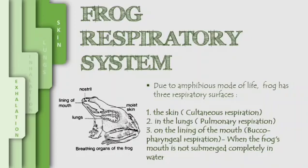it has three respiratory surfaces on its body so that it can breathe in water and on land. The first one is the skin. Gaseous exchange through the skin is called cutaneous respiration. The second one is the lungs. Gaseous exchange through the lungs is called pulmonary respiration. The third one is on the lining of the mouth. This type of respiration is called buccal pharyngeal respiration. Today, we will just explain the gaseous exchange through the skin and the lungs.